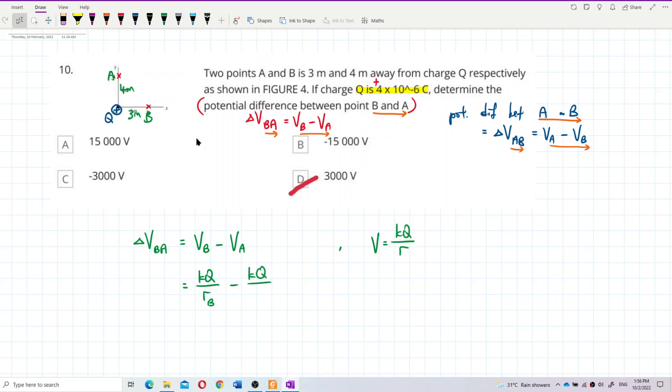That means r_B is distance of Q to point B, r_A is distance of Q to point A.